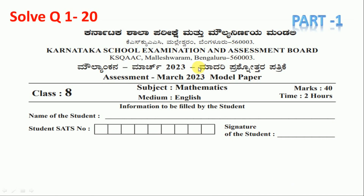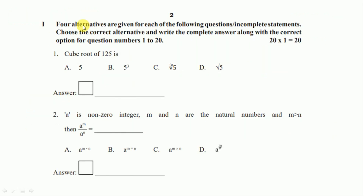In today's class we are going to solve a board exam model question paper of class 8 mathematics for English medium. This is part 1. In part 1 we solve question number 1 to 20. Four alternatives are given for each of the following questions. Choose the correct alternative and write the complete answer along with the correct option for question numbers 1 to 20.